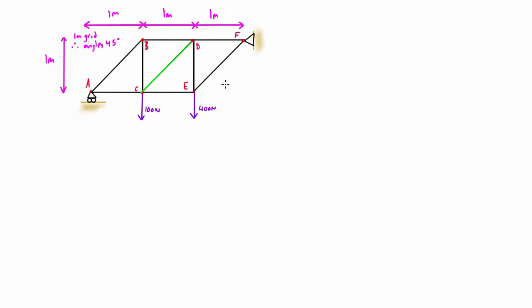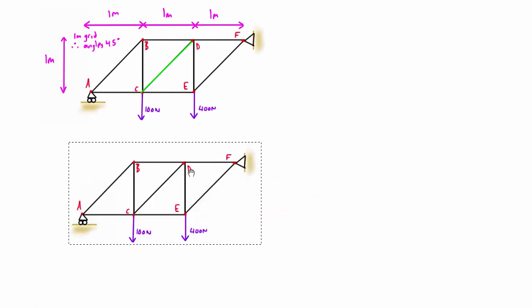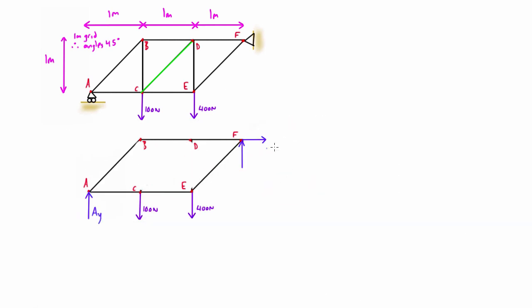The first thing we need to do is draw a free body diagram for the whole structure to solve for the support reactions. We'll take the sum of forces in the x direction and set that equal to zero. If we look at this, we only have one force in the x direction, and that is Fx. So the reaction force Fx, the horizontal reaction, is zero.